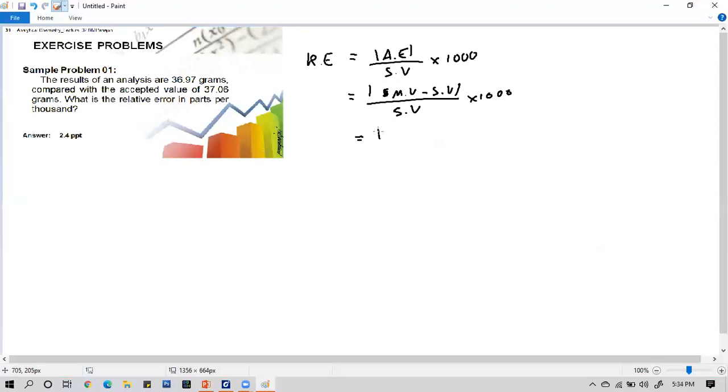What is our measured value? The problem says 36.97 grams as the results of the analysis. So, 36.97 minus the standard value, which is the accepted value 37.06, absolute value all over 37.06 times 1000. We will have an answer of 2.43 parts per thousand.